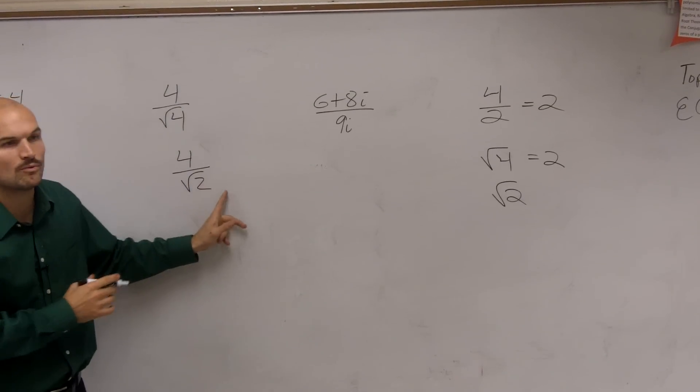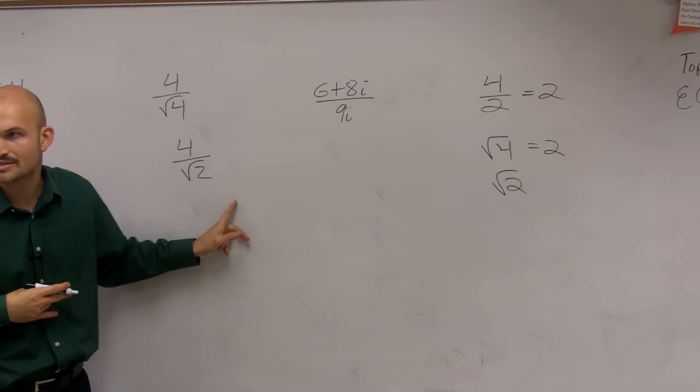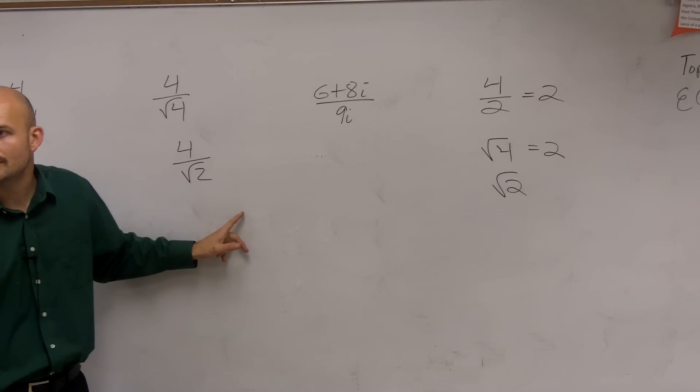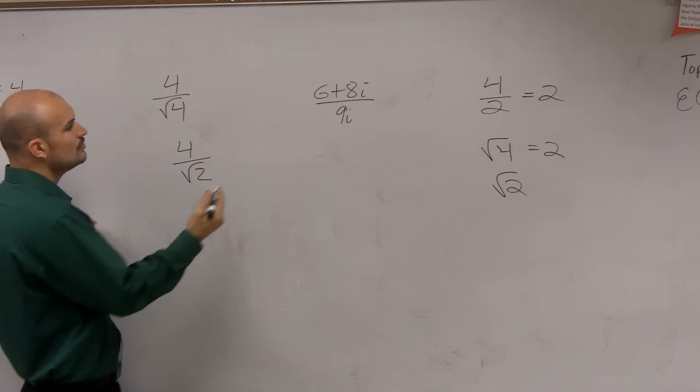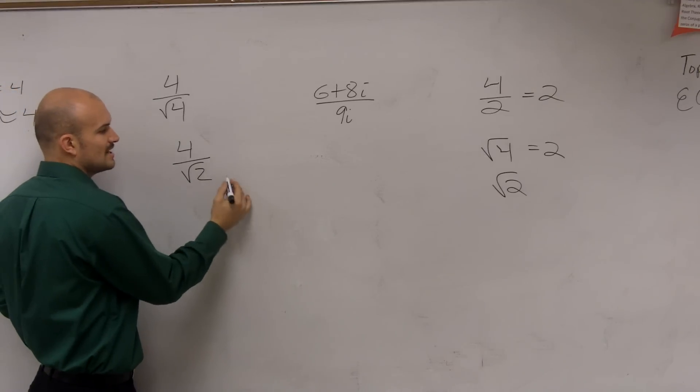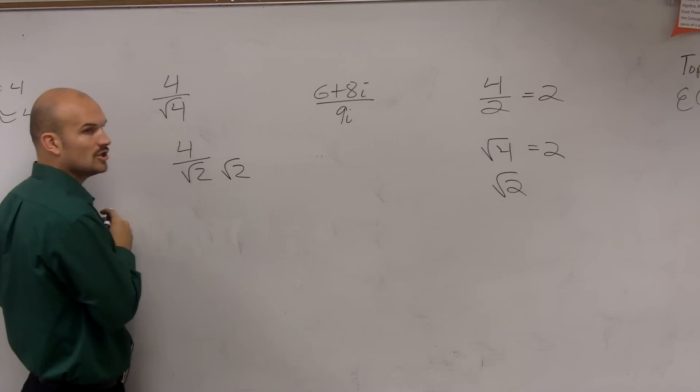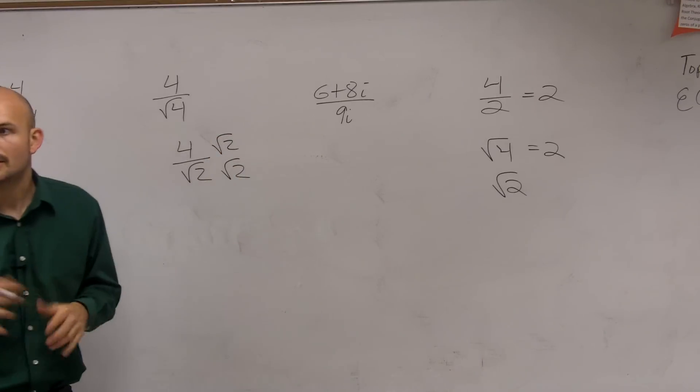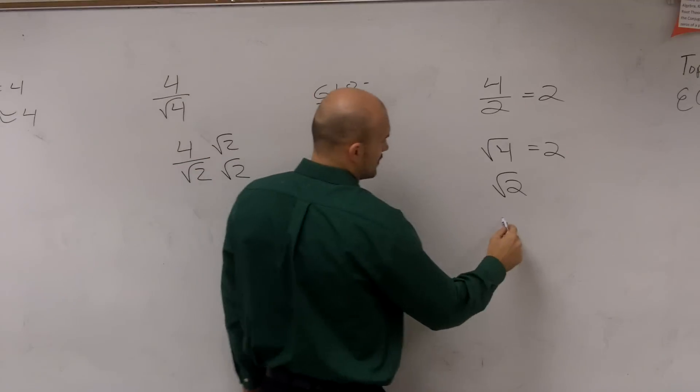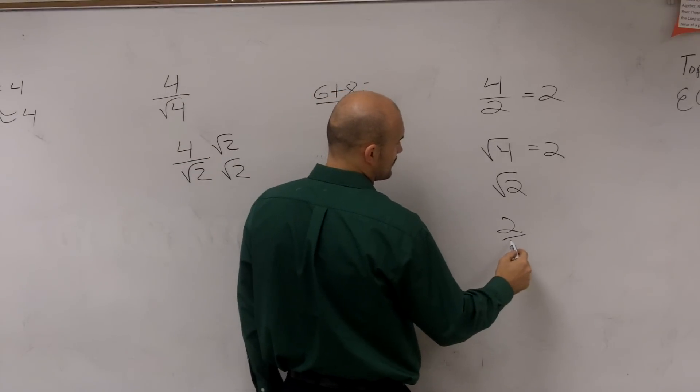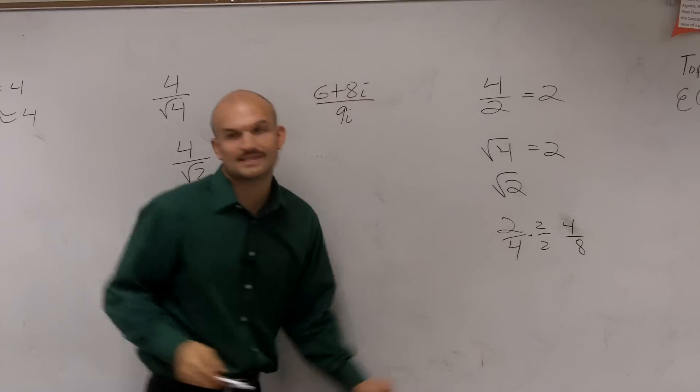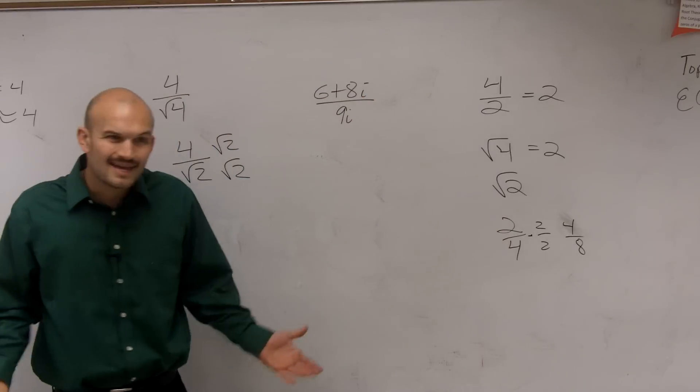So does anybody remember what we did to get rid of the square root? What do you do? Square it. You square it, or rather than just saying square it, I'm going to say multiply by the square root of 2 on the top and the bottom. And the reason why you do that is because, think about it this way. If I did 2 over 4 times 2 over 2, I get 4 over 8. Is 4 over 8 the exact same as 2 over 4? Yeah.